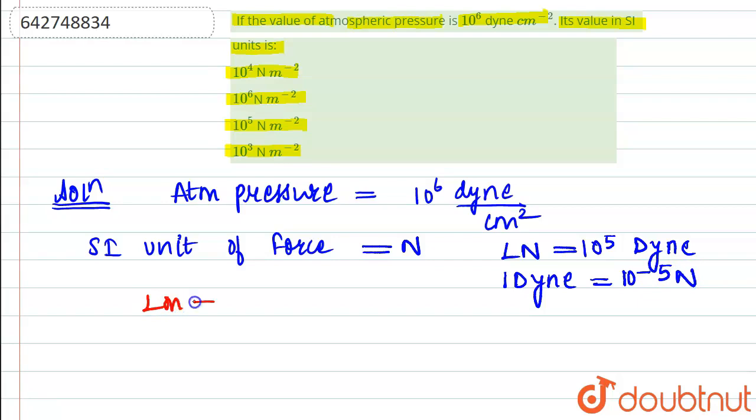We also know that 1 meter is equal to 100 centimeter. So from it, 1 centimeter is equal to 10 to the power minus 2 meter. So here,